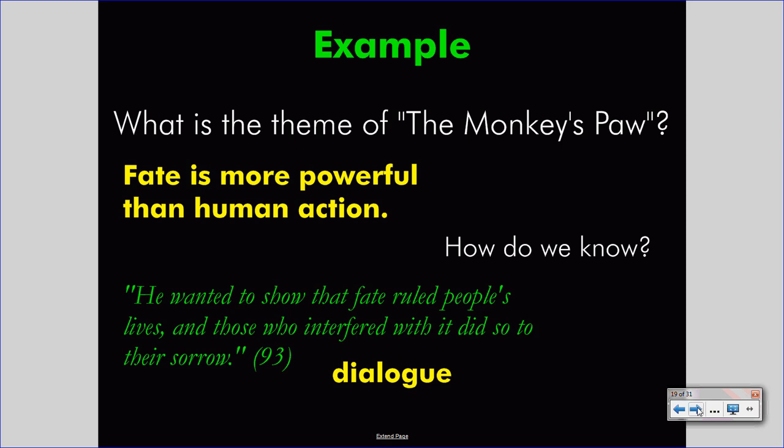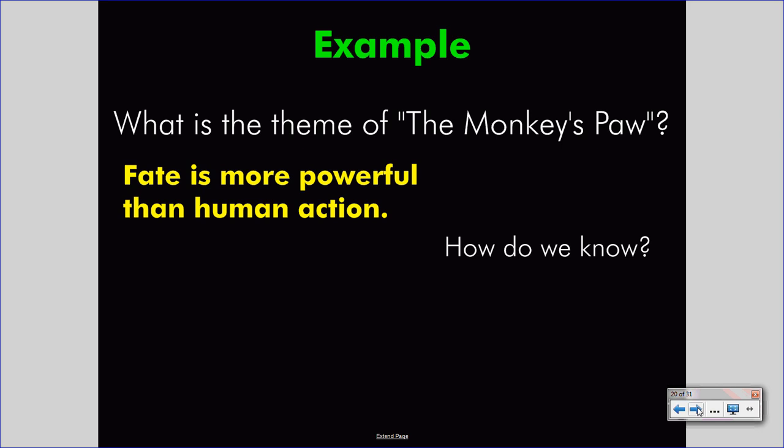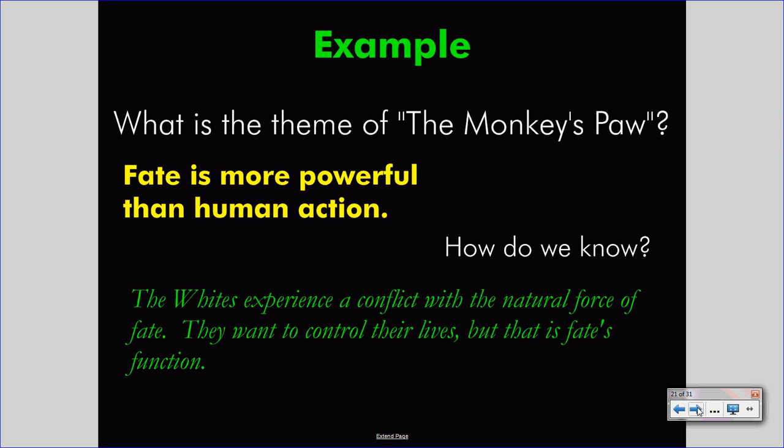We need more than one piece of information. So let's look to something else. The Whites experience a conflict with the natural force of fate — they want to control their lives, but that is fate's function. This is a classic conflict between the Whites as protagonists and fate as the antagonist. Their goal is complete control over their lives, to change their lives simply by wishing. But fate controls the outcome of choices and human action. This is an environmental conflict where humans are brought into conflict with nature, and it helps us understand that fate is being opposed by humans.